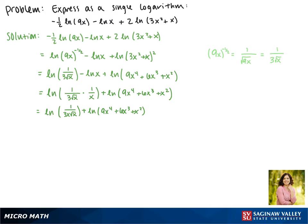Now we can combine these two terms. Since they're logs with the same base being added together, what's inside of them gets multiplied. So this becomes the natural log of 9x to the fourth plus 6x cubed plus x squared, all over 3x times the square root of x.